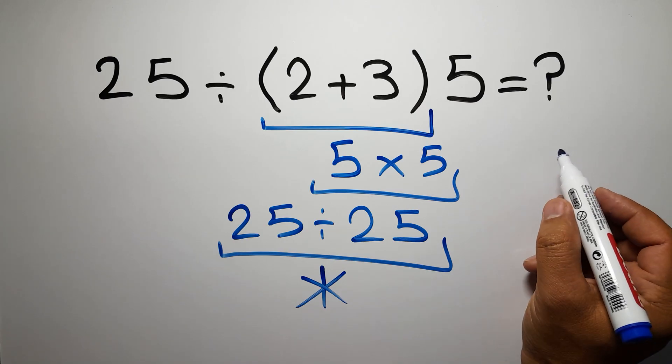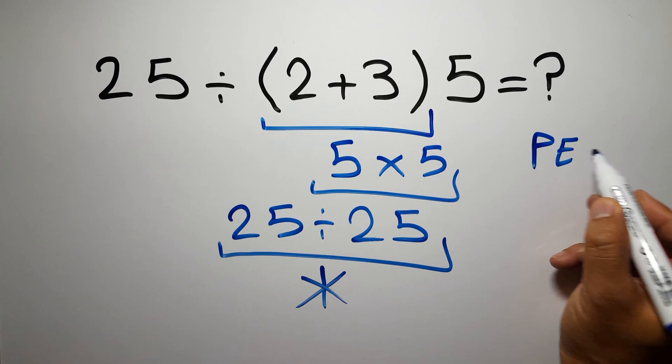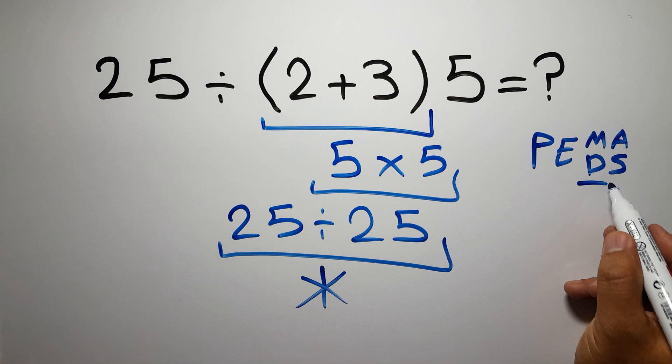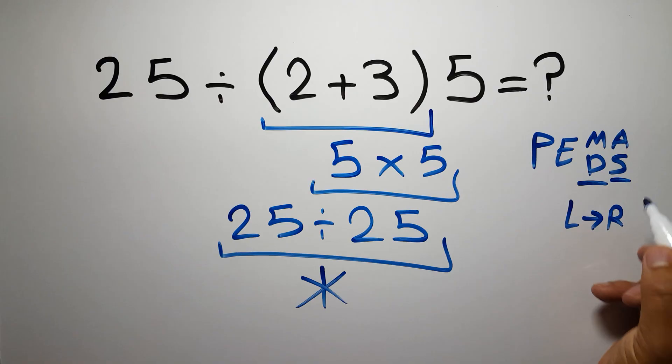because according to the order of operations, first we have to do parentheses, then exponents, then multiplication or division, and finally addition or subtraction. Remember that multiplication and division have equal priority and we have to work from left to right, and the same applies to addition and subtraction.